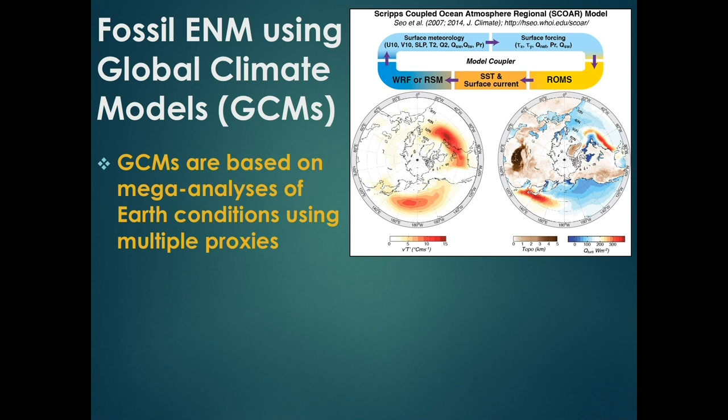When applying ecological niche modeling to the fossil record, there are two basic approaches. The first is reconstruction of environmental data based on global climate models (GCMs). GCMs involve compiling massive analyses of earth conditions using various proxies to understand what ocean and atmospheric circulation was doing at a given time. You can then reconstruct spatial coverages of environmental gradients like temperature, sea surface salinity, and precipitation. In the fossil record, these need to account for bathymetry, elevation, tectonic plate motion, sea level changes, and proxy data to model past ocean circulation patterns.